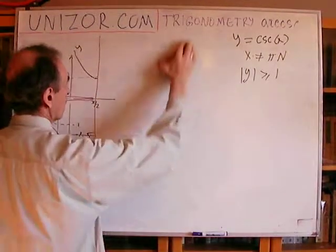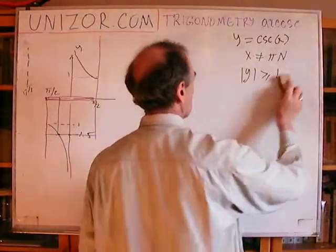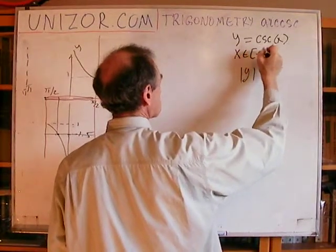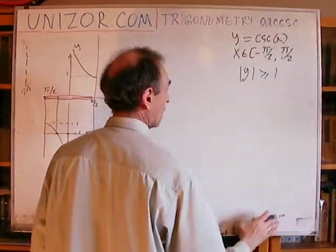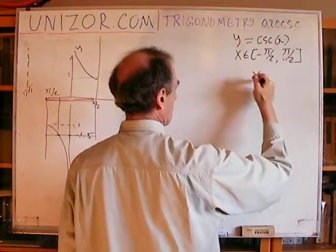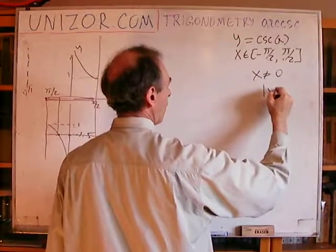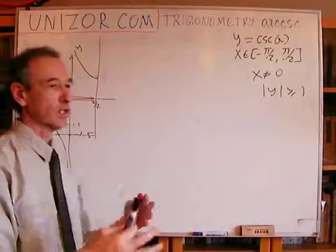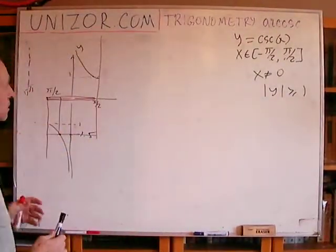You change the sign if you change the sign of the argument. Alright, so on this particular interval, we can define our inverse function. So instead of this, we reduce domain to minus pi over 2 to pi over 2 without the midpoint zero where the function is not defined and it has an asymptote. But the y is still in the same range from one up or from minus one down. So we did not really change the range of the original function. We just changed the domain, reduced it to the interval where the function is monotonous.